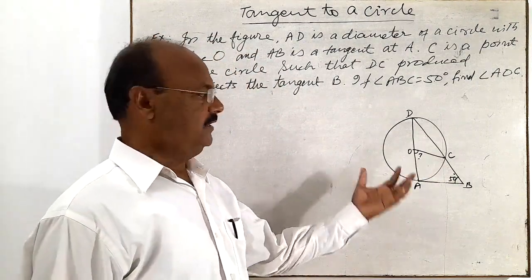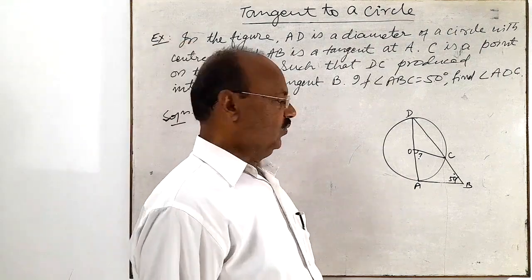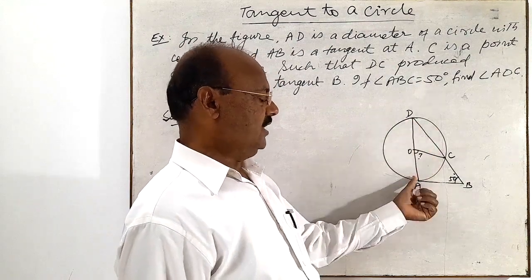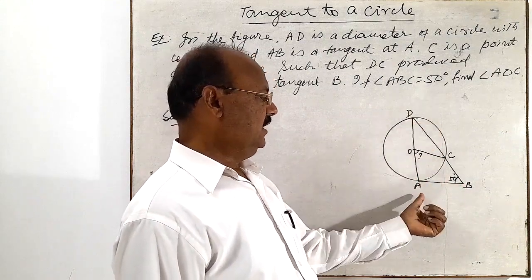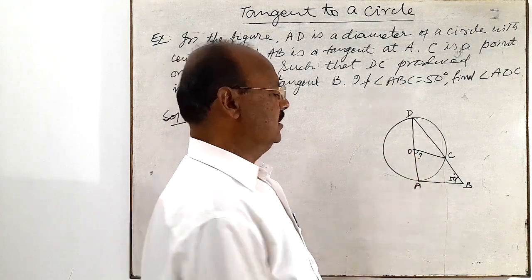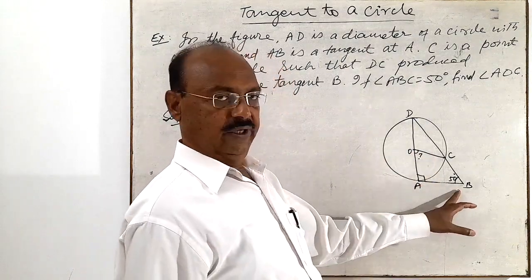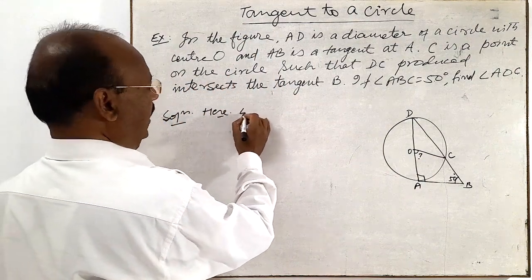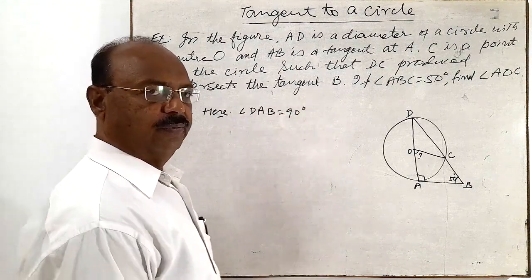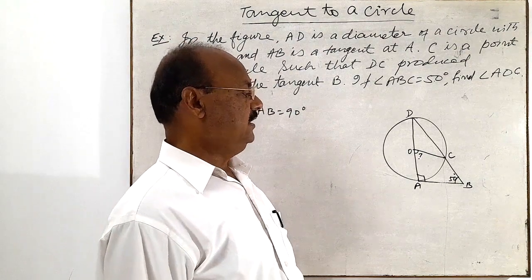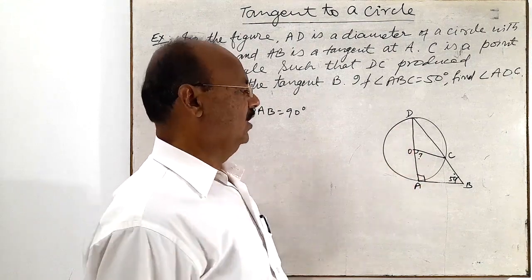The solution is very simple. We know a property that the radius or diameter is always perpendicular to the tangent at the point of contact. So here, OA is a radius, and therefore angle DAB equals 90 degrees — the radius OA is perpendicular to AB because the tangent is always perpendicular to the radius at the point of contact.